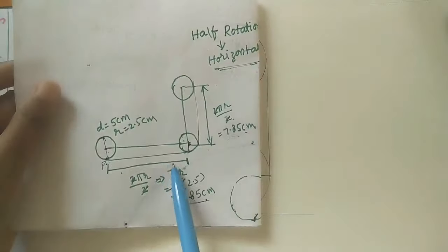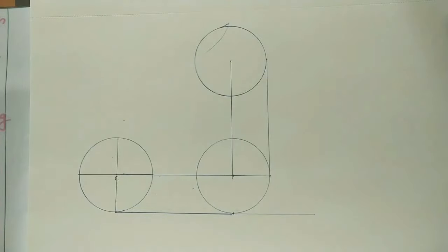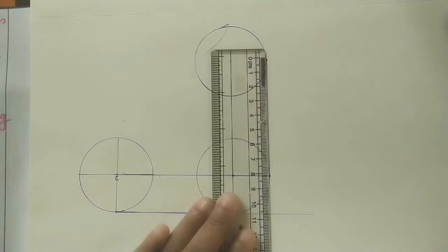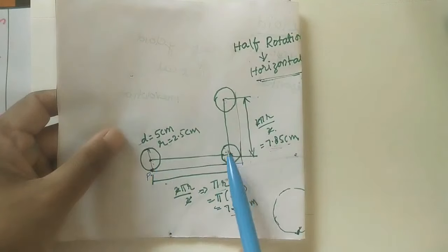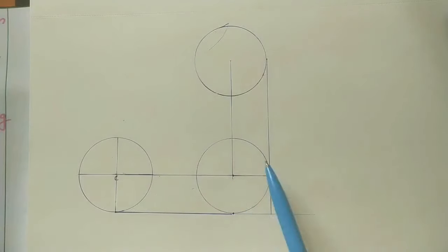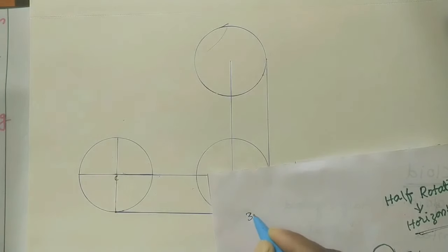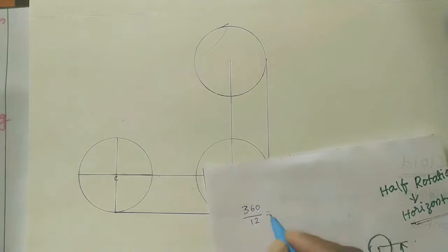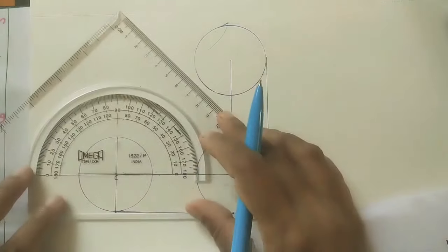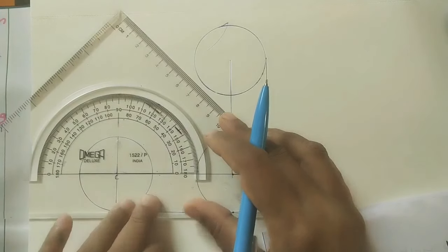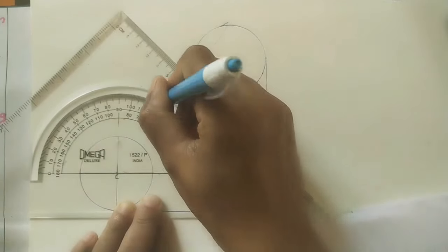Do the vertical surface also - take the same length and build the scale here. Join the horizontal surface and the vertical surface. Now we have the positions of the circle for the half rotations. Divide the circle into 12 divisions - at the center the angle is 360 degrees divided into 12 parts, so each part is 30 degrees. Using the protractor I am taking 30 degrees increments: 30, 60, 90, 120, 150.